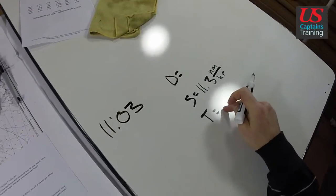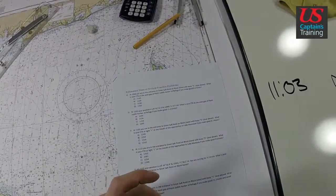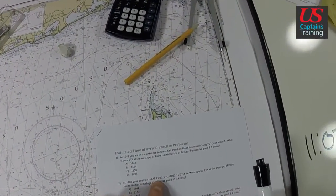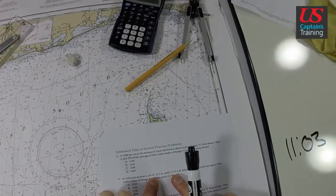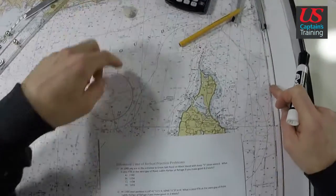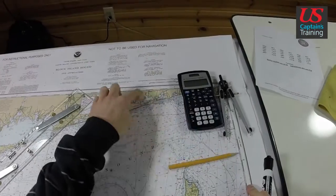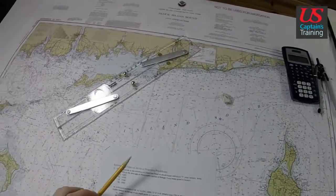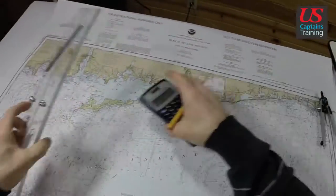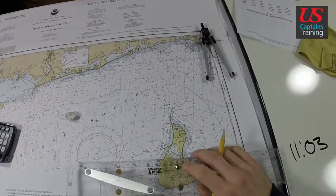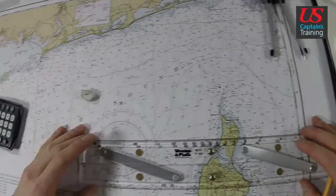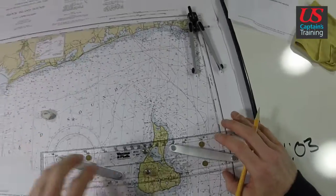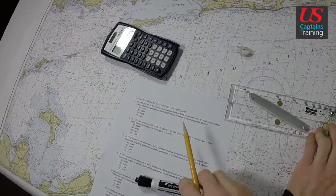We're going to have to add the travel time to 11:03. Now let's find our distance between these two points: 41°12.5'N and 71°37.4'W — so 12.5 and 37.4. We'll be right around here. It's always good to estimate where you are, navigate, estimate, guesstimate — do these things so you know about where you are.